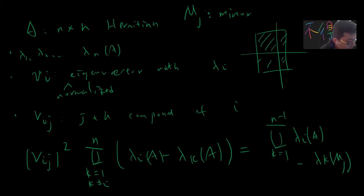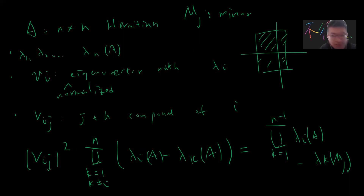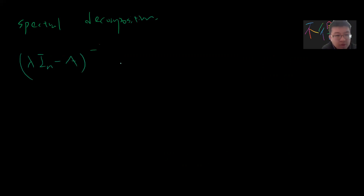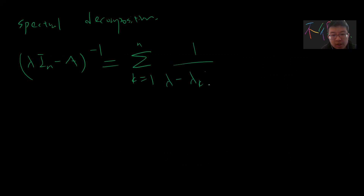Let me give the proof using — I think this is Cramer's proof — which is very simple. We need two key ideas. So once you have the spectral decomposition, consider (lambda*I minus A) inverse, which you can write as a summation over k from 1 to n of 1 over (lambda minus lambda_k) times v_k v_k^*. This assumes lambda is not equal to any lambda_k. So this is the spectral decomposition — remember, matrix A can be written as the sum of lambda_k times v_k v_k^*.